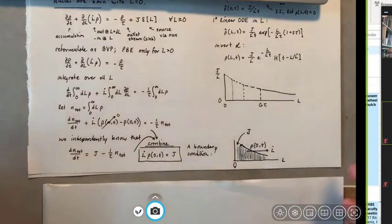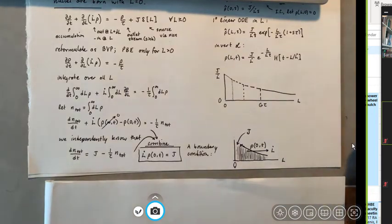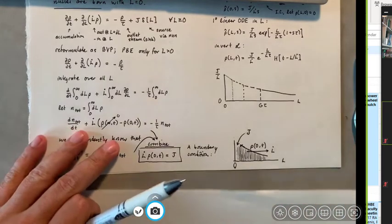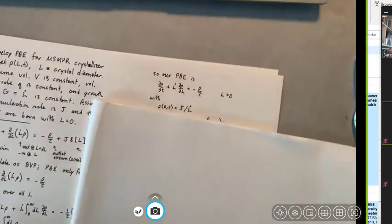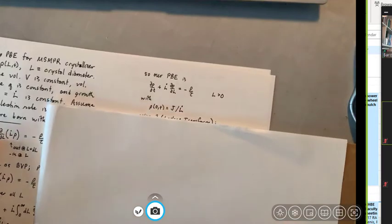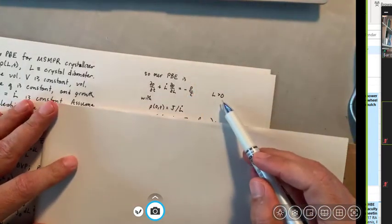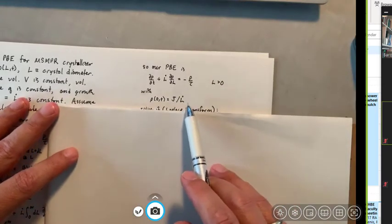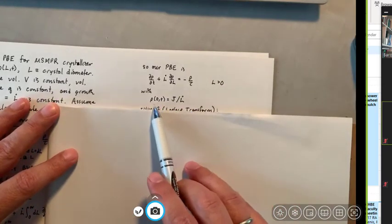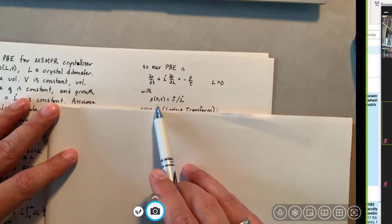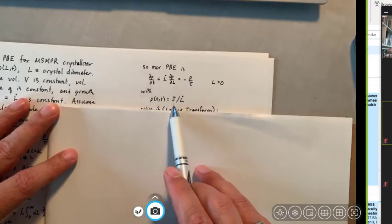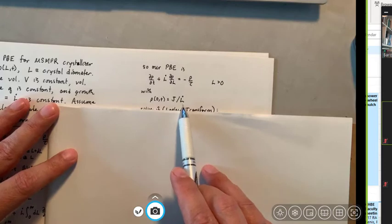Hopefully that kind of gives you an idea of how you can recognize the need for these boundary conditions and jump conditions in other problems as you go forward. So I'm going to move back up now and just take stock of where we are. So we have a population balance equation that's valid for all L greater than zero. And we have a boundary condition now. This is the thing we just derived that says that the value of the population at length zero is equal to the nucleation rate divided by the growth rate.